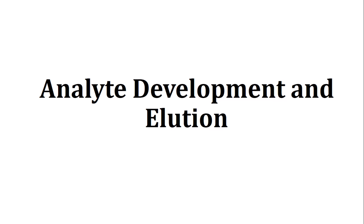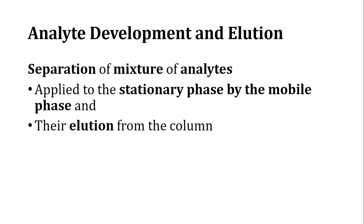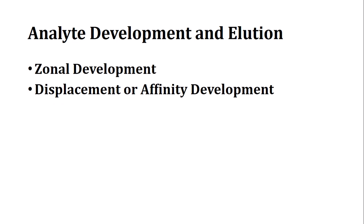An important part of column chromatography is analyte development and elution. Even after analytes are separated, we need to elute them out of the column. The separation of a mixture of analytes is applied to the stationary phase by the mobile phase, and the elution from the column is called analyte development and elution.